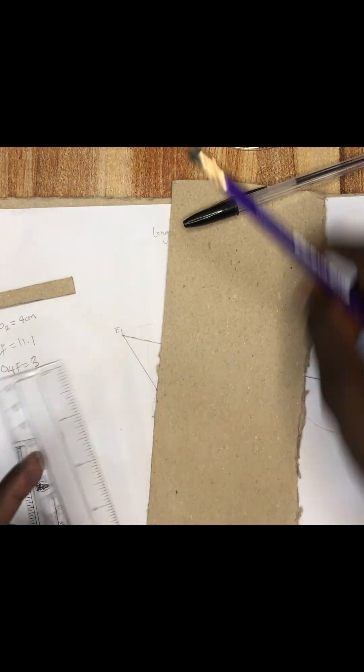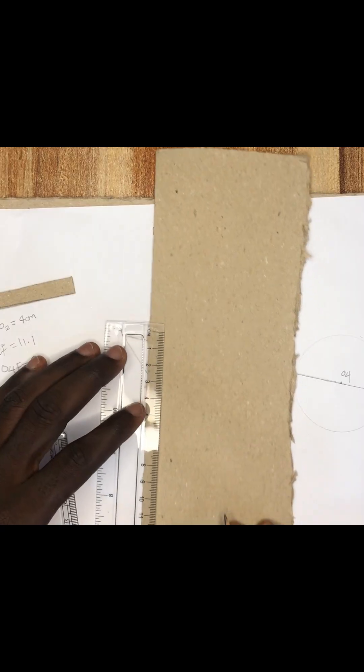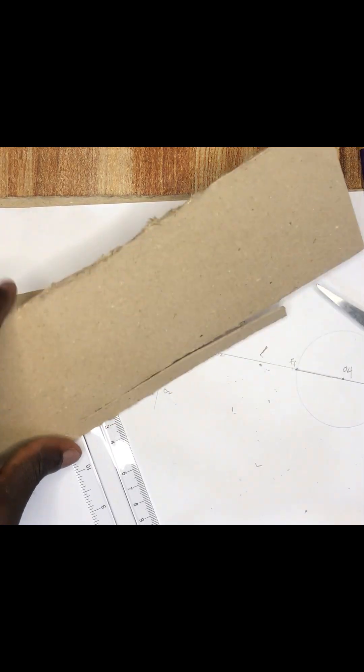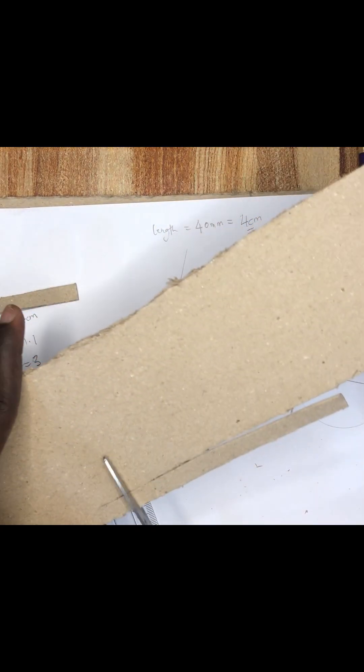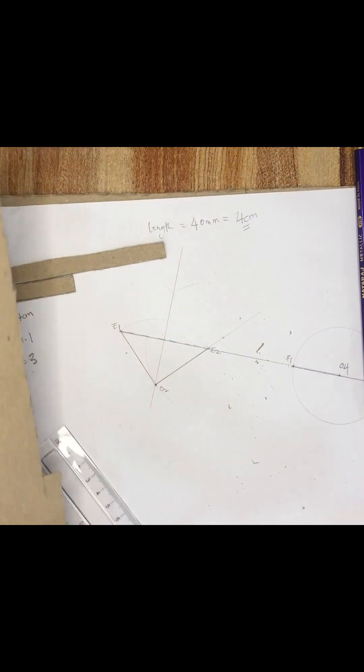The next is the 11.1, so 11.1 you add an extra 2 cm, that would be 13.1. The next is the 3 cm, so that one will cut 5.